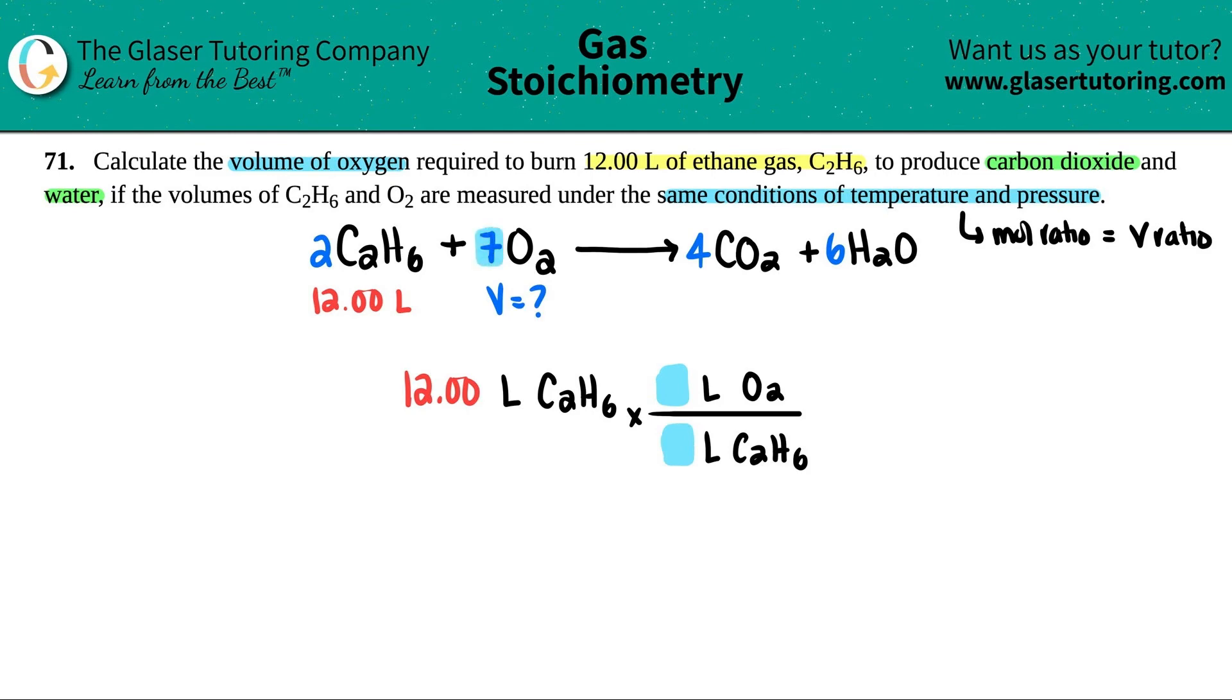And just use these numbers as if you would with your mole ratio. O2, there was a 7 in front of it. So I'm going to put a 7 here. And there was 2 in front of the C2H6. So I'm just going to put a 2 here. And then there you go. Liters cancel out. And now you're left with the liters of O2.